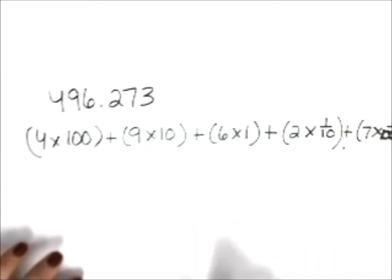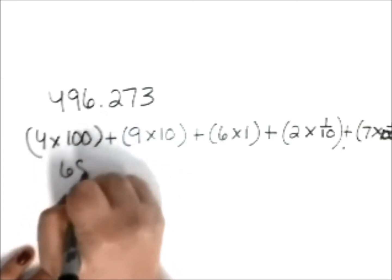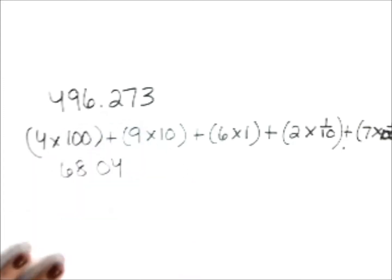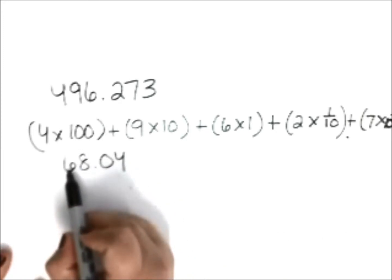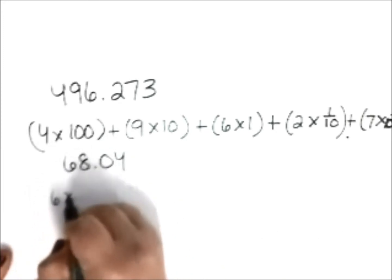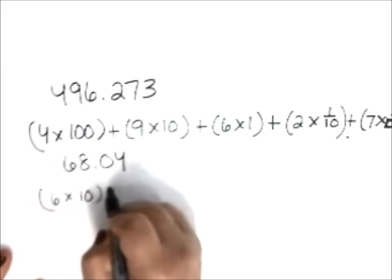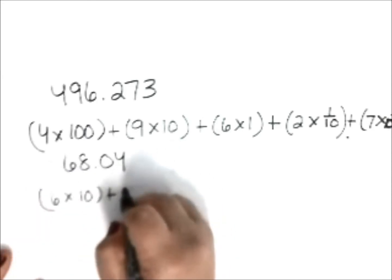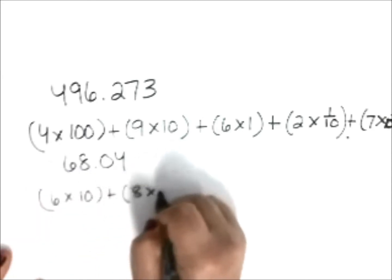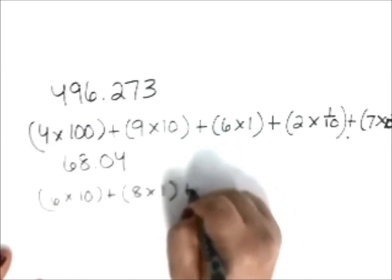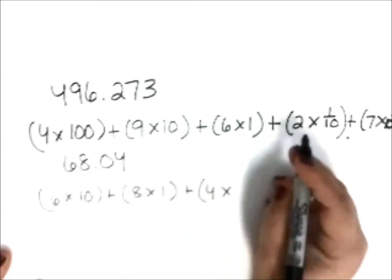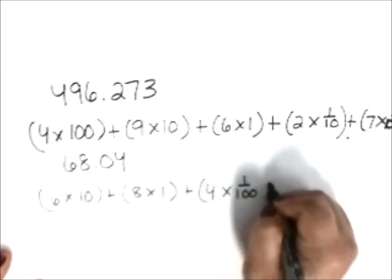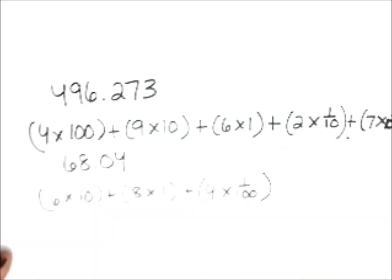Let's do another. We have 68 and 4 hundredths. Let's do this one in expanded powers of 10. So 6 is in the tens place. So we're going to do 6 times 10. 8 is in the ones place. So we're going to do 8 times 1. 4 is in the hundredths place. So we are going to multiply 4 times a hundredth in fraction form. And that is expanded form powers of 10.